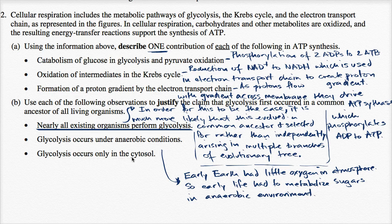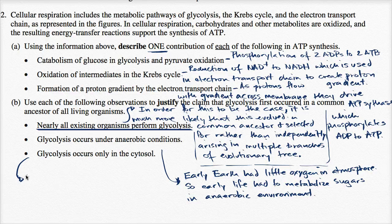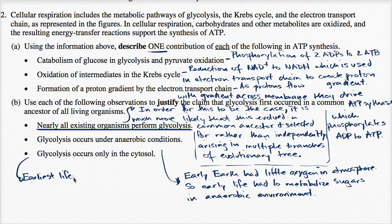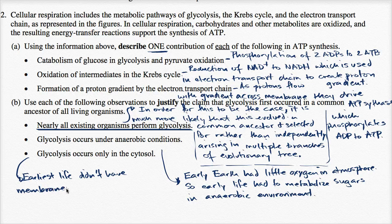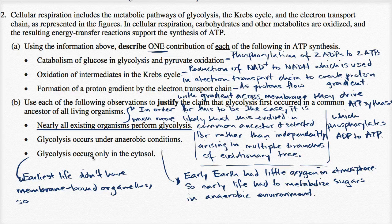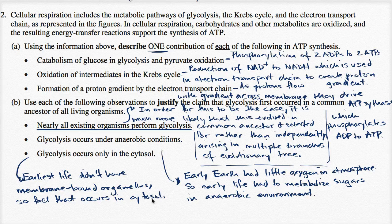Glycolysis only occurs in cytosol. So earliest life didn't have membrane bound organelles. So the fact that it only occurs in cytosol, fact that occurs in cytosol, consistent with that it's possible that early life did it.